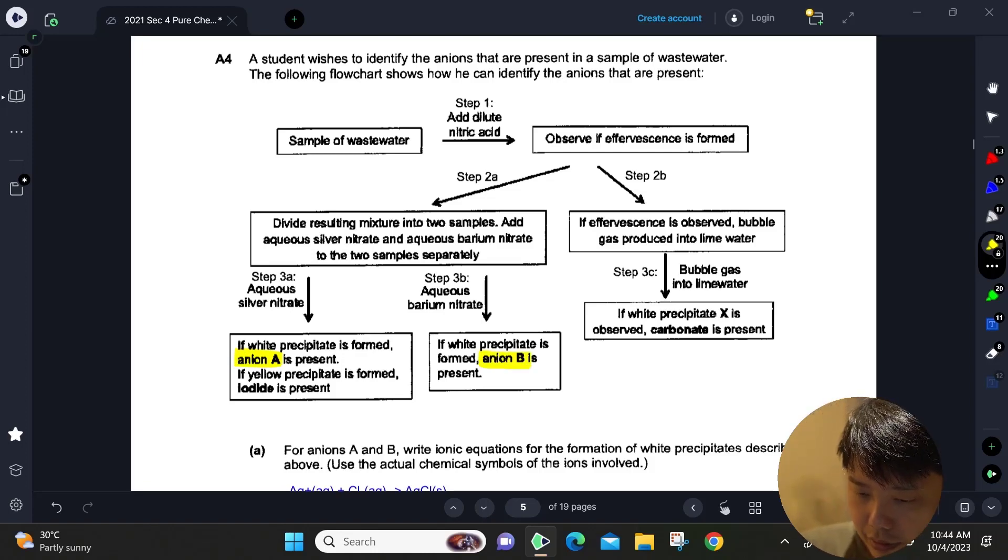After adding dilute nitric acid, we just want to confirm if effervescence is formed. So we are checking for the carbonate, checking for carbonate anion.